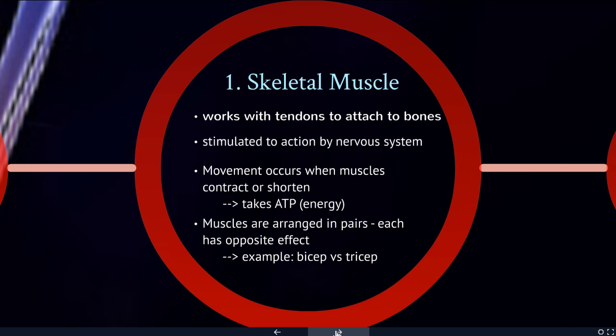Our muscles are arranged in what's called antagonistic pairs, meaning you have one muscle that contracts and moves a body part one way, and then an opposite one that moves the opposite way. Biceps and triceps in your upper arm are a great example. When you contract your bicep, your arm moves up, and when you contract your tricep on the backside of your upper arm, it pulls your hand back down. This allows fine-tuned control.